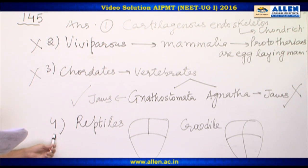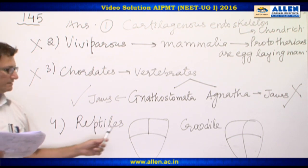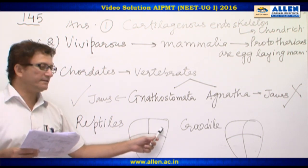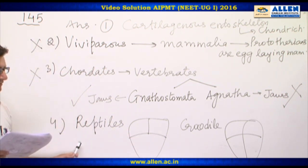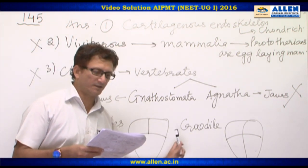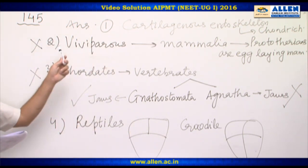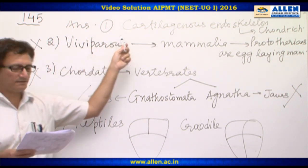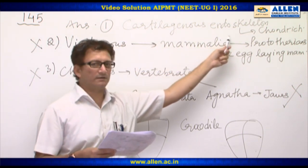The fourth option: three-chambered heart with an incomplete divided ventricle in Reptilia. Reptiles do have a three-chambered heart, but crocodile is the exception with a four-chambered heart. Therefore, the answer is option one: cartilaginous endoskeleton in Chondrichthyes.